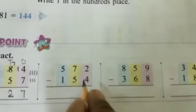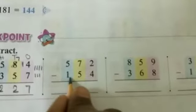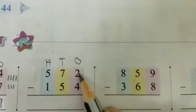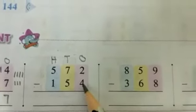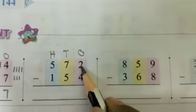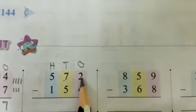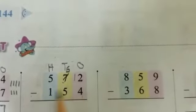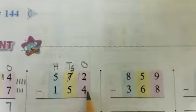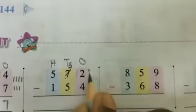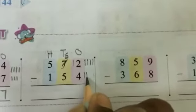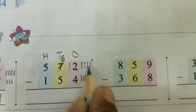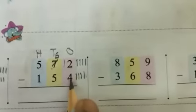Okay, and next problem: 572 minus 154. Write digits on top — hundreds, tens, ones. First we subtract the ones place: 2 ones minus 4 ones. 4 ones cannot be subtracted from 2 ones. So regroup 7 tens and 2 ones into 6 tens and 12 ones. 12 minus 4: count 4 after 12 — 5, 6, 7, 8, 9, 10, 11, 12. Count lines: 1, 2, 3, 4, 5, 6, 7, 8. 12 ones minus 4 ones equals 8 ones.